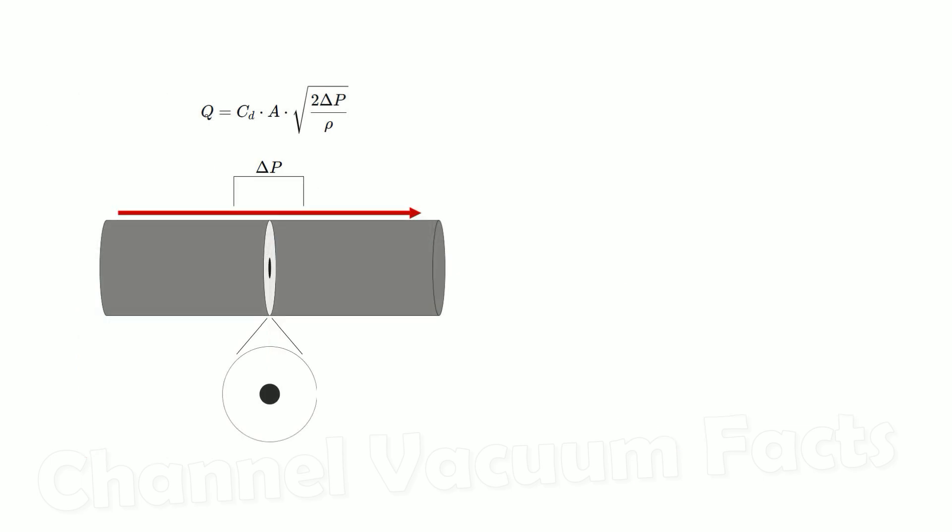There are many other methods that can be used to measure airflow. You could machine a very precise orifice plate in a duct and measure the pressure drop across it, and then use the Bernoulli equation and discharge coefficients across it to determine flow rate.